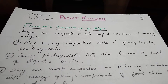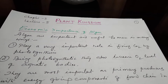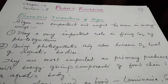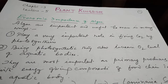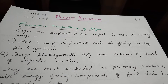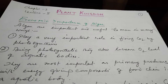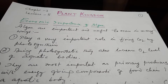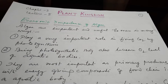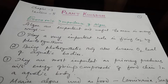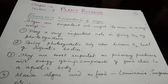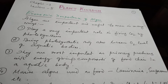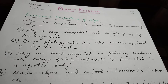Algae are important and useful to man in many ways. Number 1: they play a very important role in fixing CO2 by photosynthesis. Being photosynthetic, they also increase the O2 level of aquatic bodies. They are most important as primary producers — the energy-giving components of the food chain in an aquatic body.